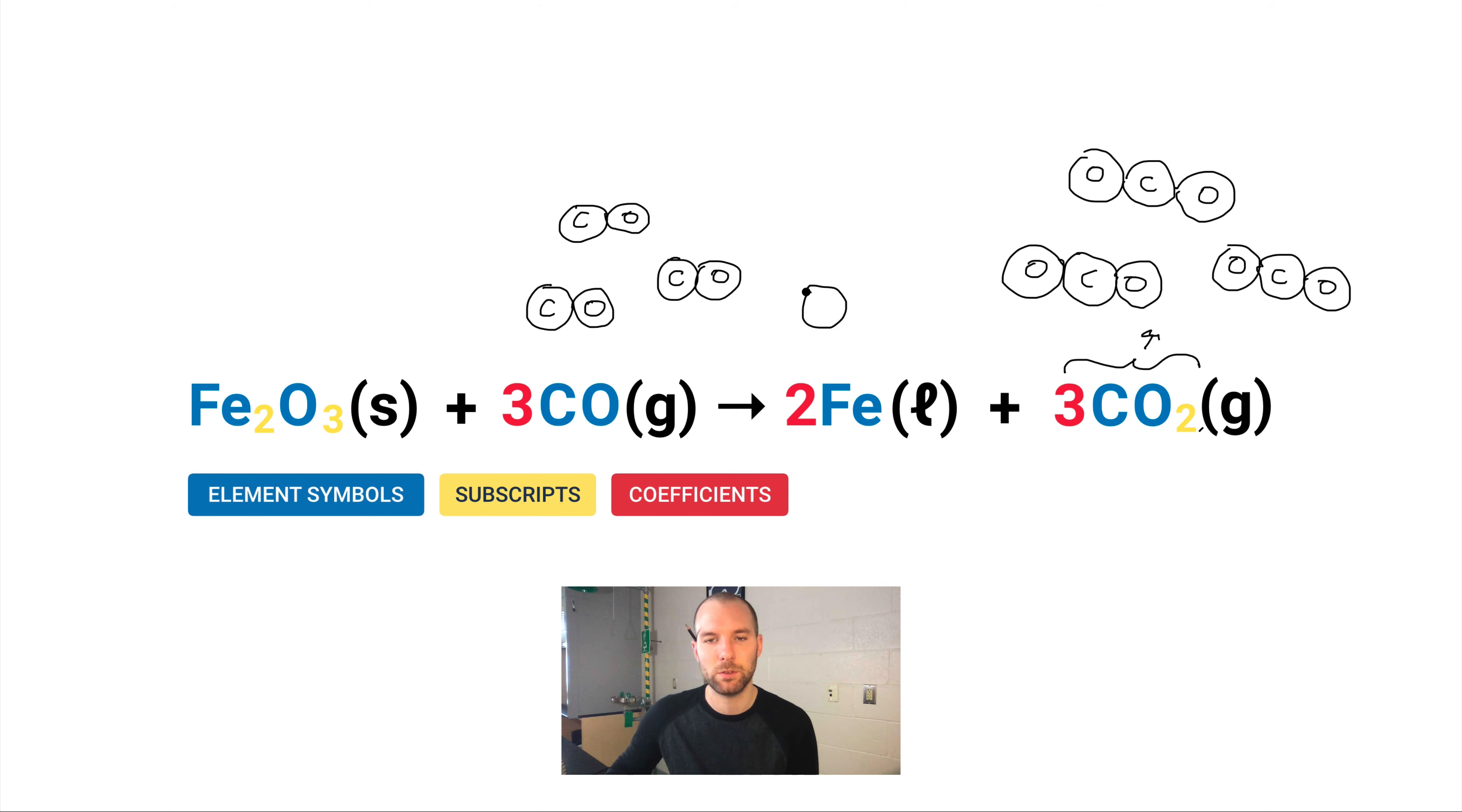The two here just means two separate Fe atoms. So there's an Fe, and then there's an Fe. Okay, so that's what the coefficients mean.